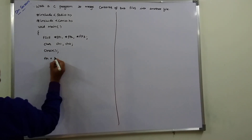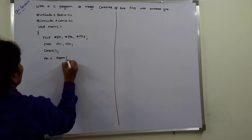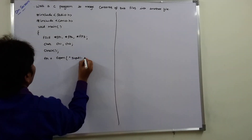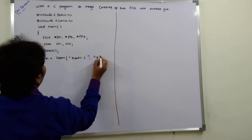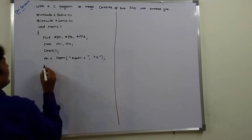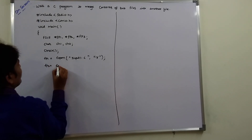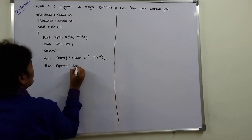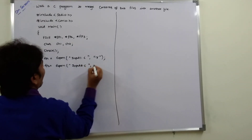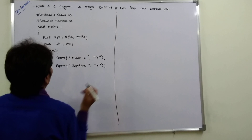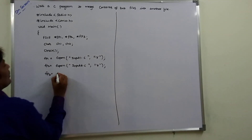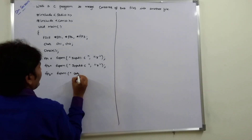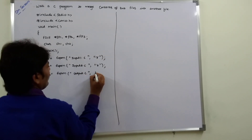fp1 is equal to fopen of input1.c in read mode. fp2 is equal to fopen of input2.c, also in read mode. fp3 is equal to fopen of output.c in write mode.